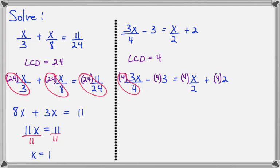4 divided by 4 is 1. Then that 1 times 3x will give us 3x. Here 4 times 3 is 12 and there is no denominator so nothing will cancel out and we get minus 12. Now 4 divided by 2 is 2. So we get 2x there. And here 4 times 2 is 8. So we get 8.